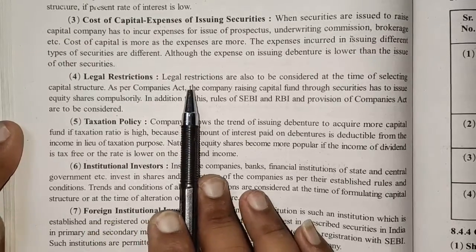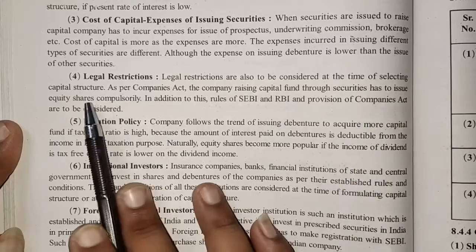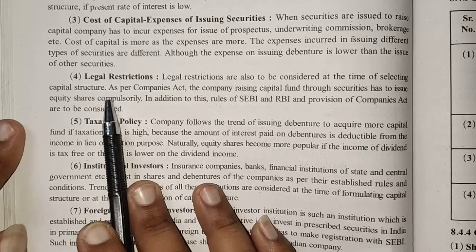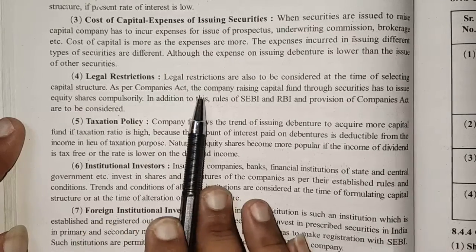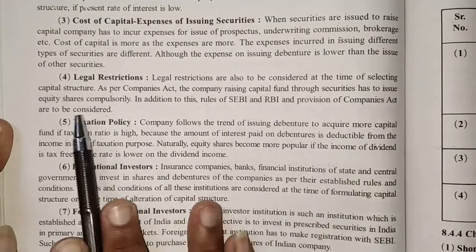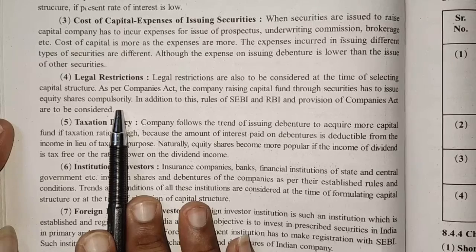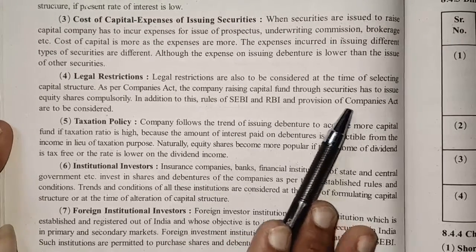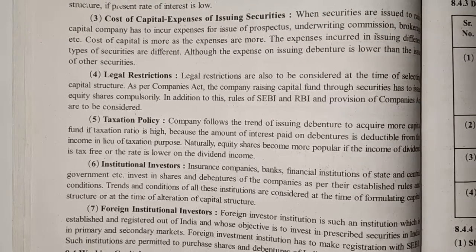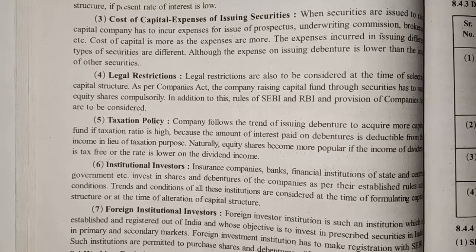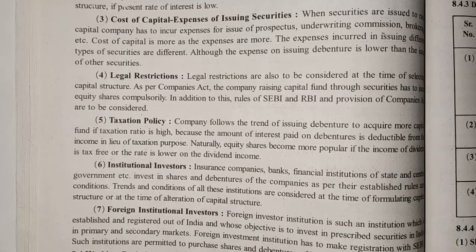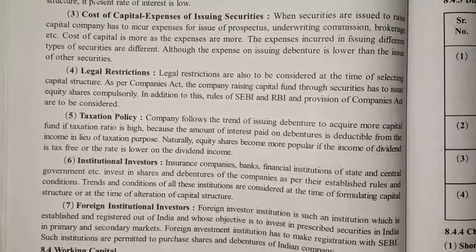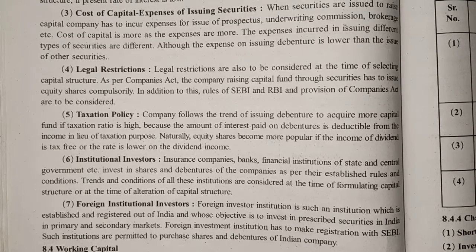Fourth external factor: legal restrictions. Legal restrictions are to be considered when selecting capital structure. As per the Companies Act, a company raising capital through securities must issue equity shares compulsorily. The rules of SEBI and RBI and the provisions of the Companies Act are also to be followed — for example, shares cannot be issued at a discount, and preference shares require a fixed rate of dividend.